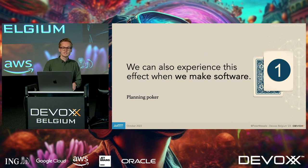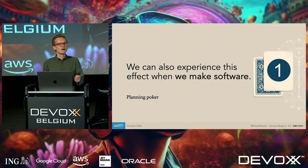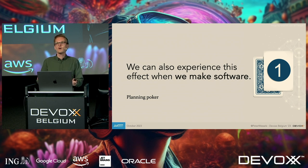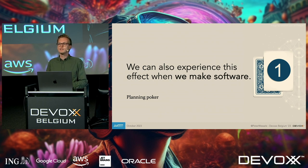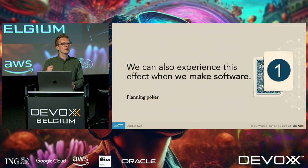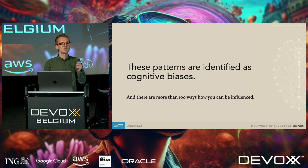We can also experience this effect when making software. For example, during planning poker, if I have to estimate the complexity of a story and someone comes in and says, 'This story is really complex — it should be at least 20 points,' although I was thinking more like 5, I'm influenced and might answer 8 instead.